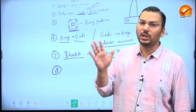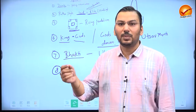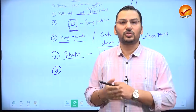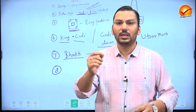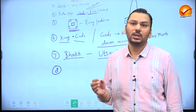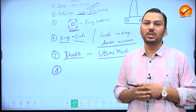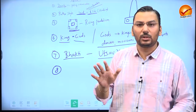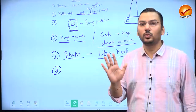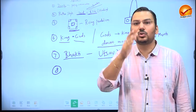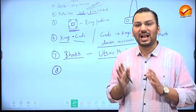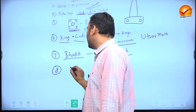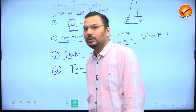Note that bronze utsav murtis appear nude in museums, but during ceremonies they were clothed separately — properly dressed before being taken into the temple. In museums they look nude; they were not nude in use. The cloth had to be changed every day, which is why it was put on top rather than cast into the bronze. After this, let me explain the segmentary state model.